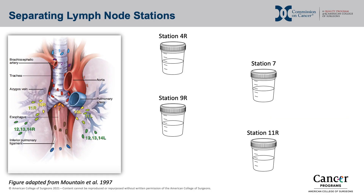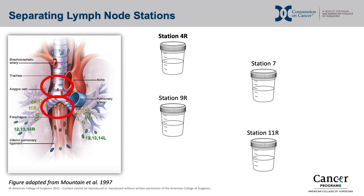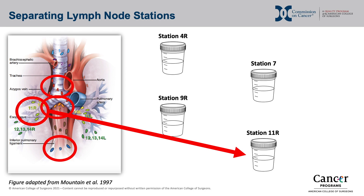Lymph node stations must be analyzed separately by the pathologist; therefore the surgeon must send each lymph node station separately, using separate specimen containers for each station. In a simulated curative intent resection of a right-sided lung cancer, four lymph node stations are sampled — three mediastinal and one hilar. Station 4R is placed in a specimen cup labeled station 4R; station 7 in its own cup labeled station 7; station 9R similarly; and finally hilar station 11R in its own cup. Four nodal stations have been sampled as required, each in its own specimen container.